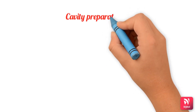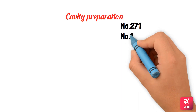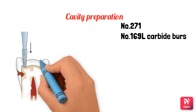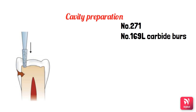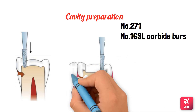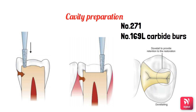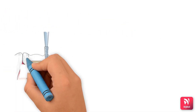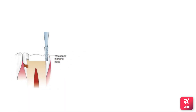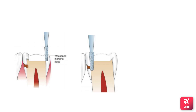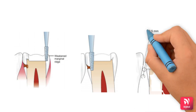Now we'll discuss the cavity preparation steps for the inlay. A 271 bur and a 169L carbide bur are used. Keeping the bur parallel to the tooth structure, penetrate closest to the involved marginal ridge and, keeping the same depth, establish the outline form. The extent of the preparation and the dovetail should be given on the occlusal surface. Proximal overcutting can result in weakening of the marginal ridge, so care should be taken. The proximal ditch is given after occlusal preparation, and the gingival floor should provide at least 0.5 mm clearance from the adjacent tooth.